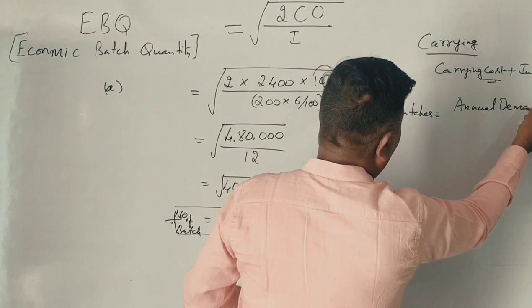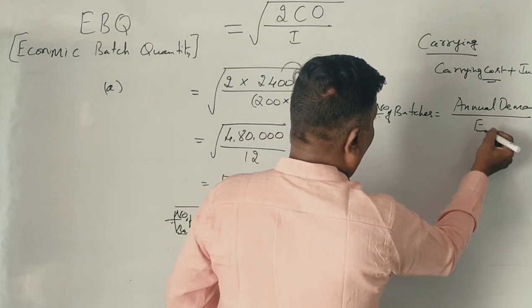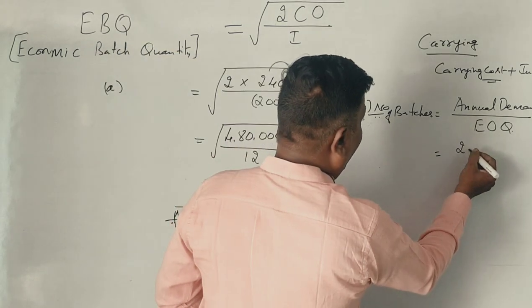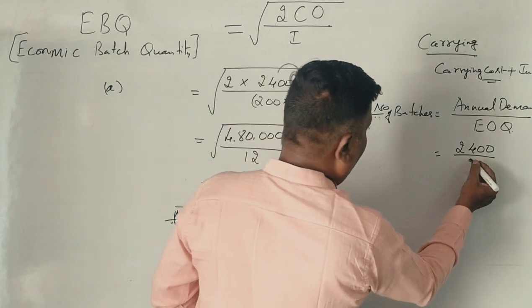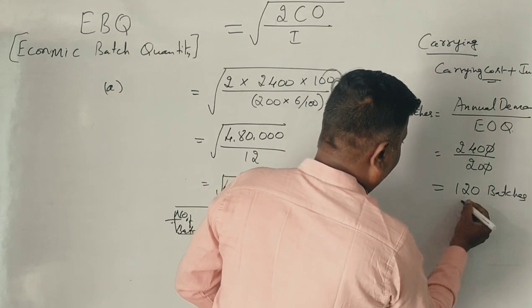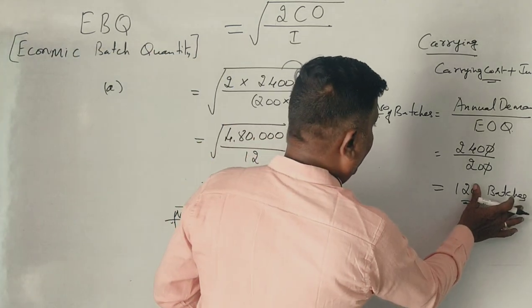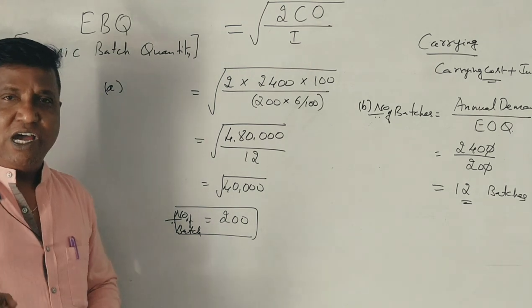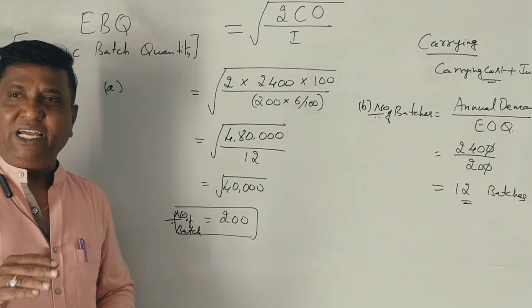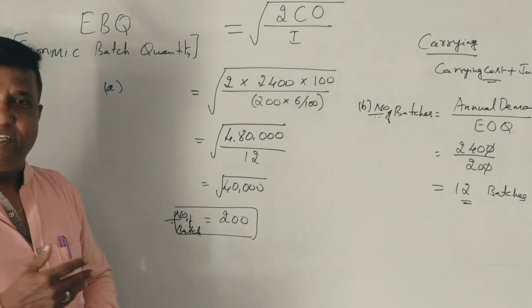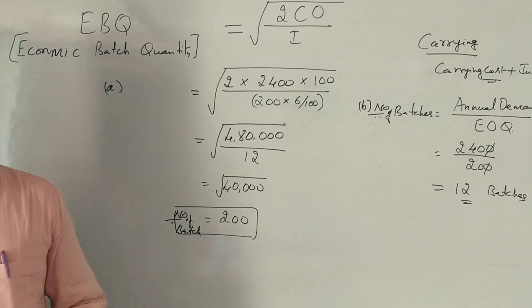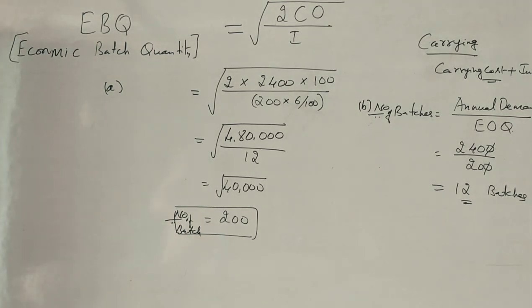The number of batches = Annual demand ÷ EBQ = 2,400 ÷ 200 = 12 batches. This is the number of batches to be produced to meet the annual demand.